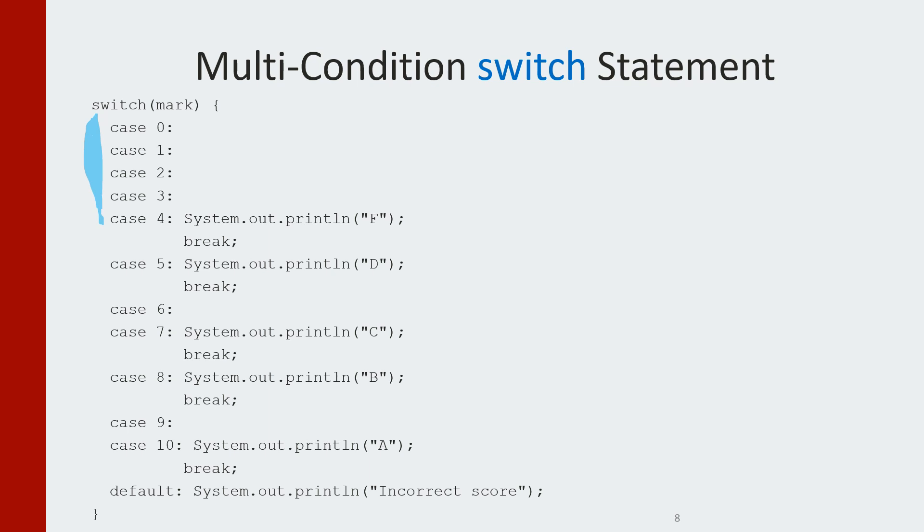So it's basically going to check is it 0, 1, 2, 3, or 4. And after it goes through and if it finds a case that works, it's going to print f.